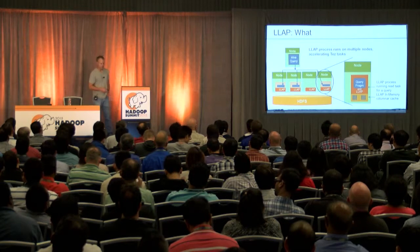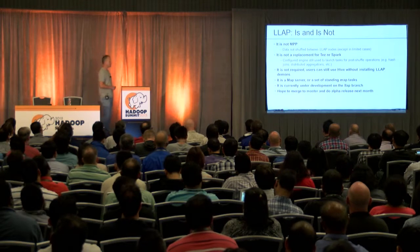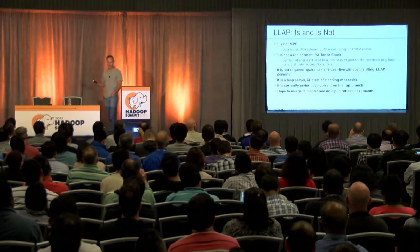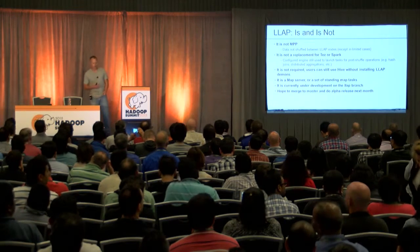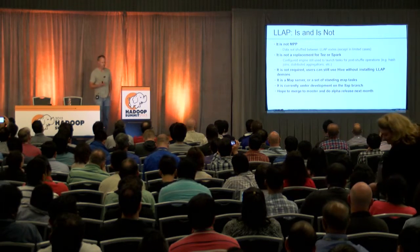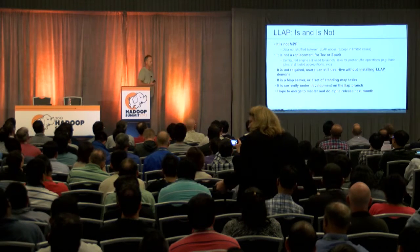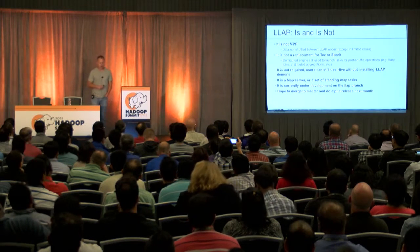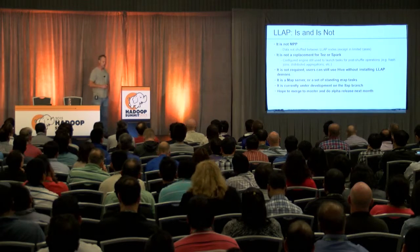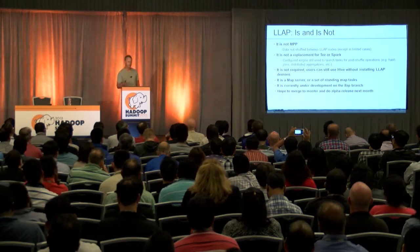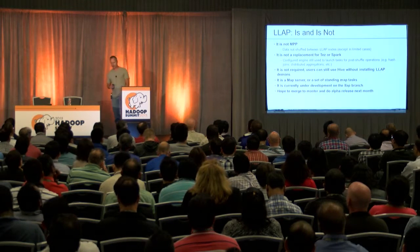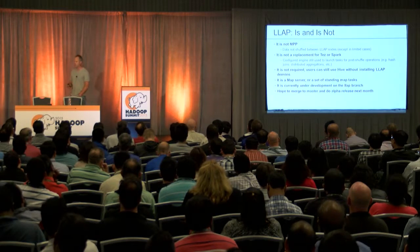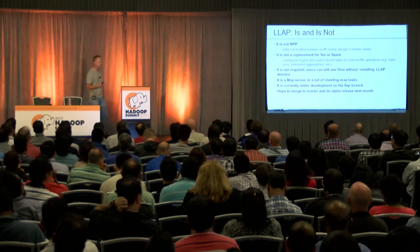It's not quite traditional MPP — it's much more of a hybrid system between MPP and Hadoop. This isn't a replacement for Tez or Spark; you would still use those post-shuffle for joins, sorts, aggregates. The engine needs to be integrated with LLAP to understand what data is coming out. Obviously you can still use Hive without it if you want. This is currently under development — there's an LLAP branch in the Hive source code. Our hope is to merge this into master and do a very early alpha release sometime next month just to get it in people's hands, get feedback, and see what's good and what needs to be fixed.